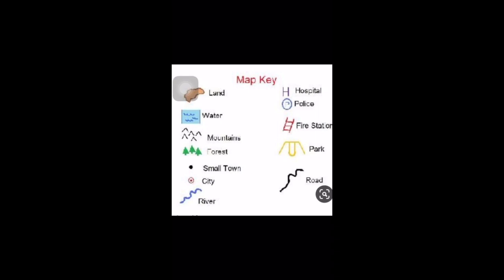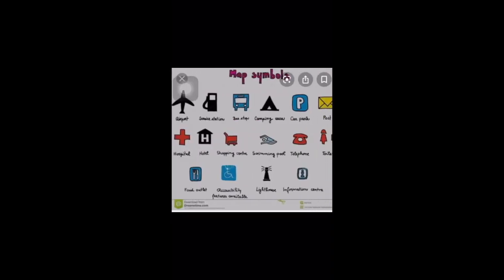The capital is shown as a red color square or red circle. Rivers are shown like this. You have hospital where H will be written, police station P, fire station, and how the park and roads are shown.